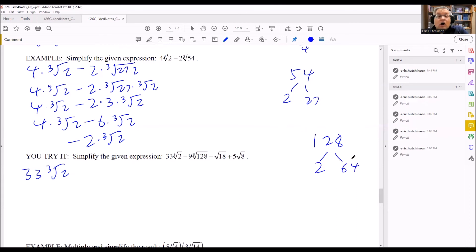Now 64 already is a perfect cube. We know that 4 times 4 times 4 gives you 64. So now I know how we're going to break this down. We're going to do 9 cube root of 64 times 2. Now these other ones, the 18, I can write as 9 times 2. And the 8, we can write as 4 times 2.